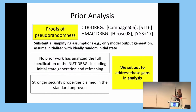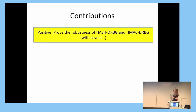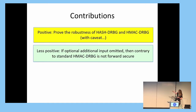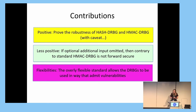So in this work, we set out to address some of these gaps in analysis, and we ultimately uncover a mixture of positive and less positive results. On the positive side, we prove the robustness of both Hash-DRBG and HMAC-DRBG — with a caveat in the latter case. On the less positive side, that caveat is that if an optional input is omitted from HMAC-DRBG, then it turns out the algorithm isn't actually forward secure, contradicting claims in the standard. Moreover, we argue that the overly flexible standard allows the generators to be used in ways that may admit vulnerabilities.